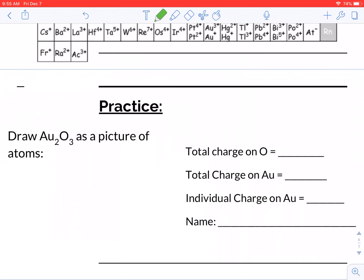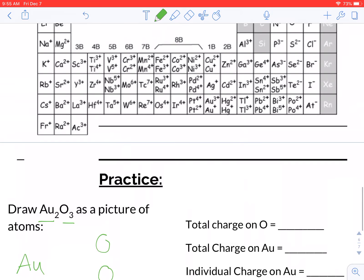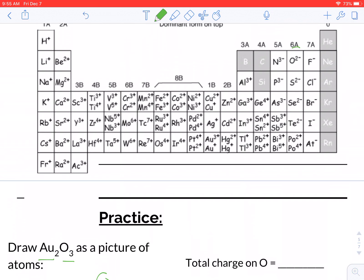So, the easiest way to do this is to draw a picture of these molecules. So for this one, we have 2 golds and 3 oxygens. So if I draw 2 gold chemical symbols and 3 oxygen chemical symbols, if we look back at our periodic table, we'll see that oxygen always has a negative 2 charge, but gold could be positive 3, it could be positive 1. So that's why we need to indicate that in the name.